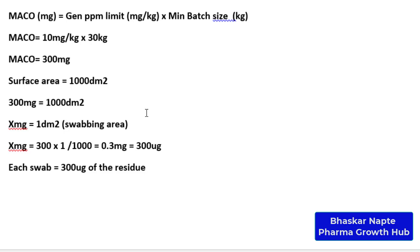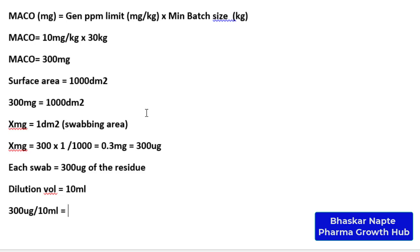Once you take the swab, 300 microgram can be the content present, provided the content is at the MACO limit level. Now, the next question: are you going to inject the swab directly into the HPLC or gas chromatography? That may not be possible, so you dilute the swab to a certain volume. If your dilution volume is 10 mL, then 300 microgram is diluted to 10 mL, giving a concentration of 300 µg ÷ 10 mL = 30 microgram per mL.